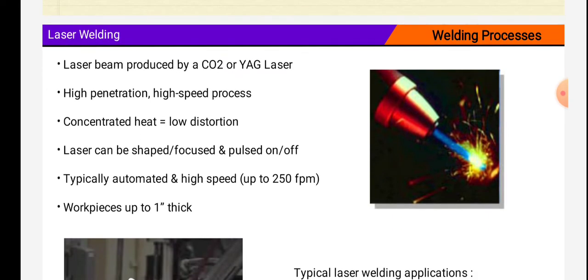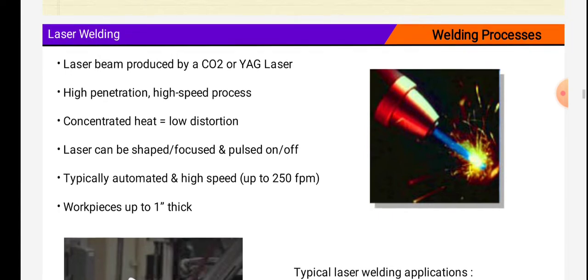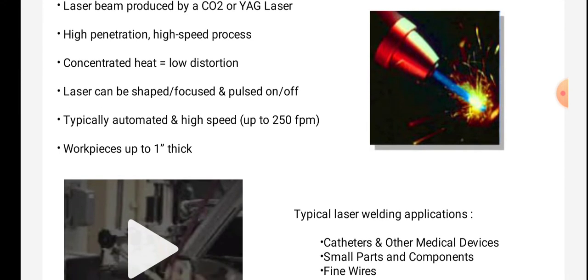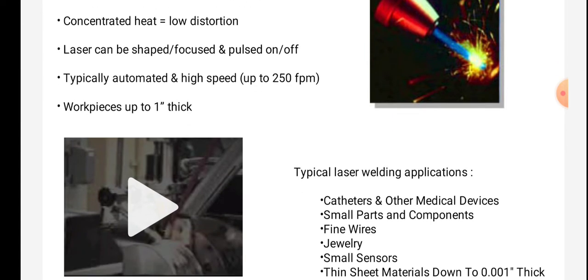Laser welding. Laser beam produced by CO2 or YAG high-aging laser. High penetration, high speed process. Concentrated heat equals less low distortion. Laser can be shaped, focused, and pulsed on-off. Typically automated and high speed, up to 250 feet per minute. Workpieces up to 1 inch thick.